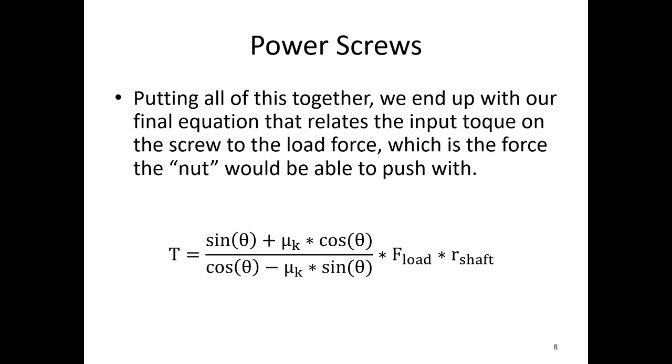And then mu K is just the coefficient of friction between the nut and the lead screw. F-load is the output of this whole situation, so the force in the apple press or the lifting force, kind of whatever we're trying to do with the lead screw. And then r shaft is the radius of our lead screw.